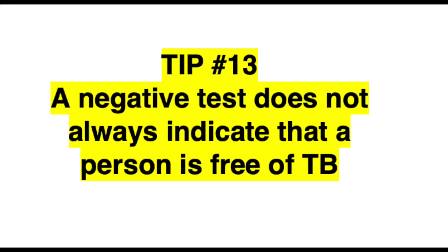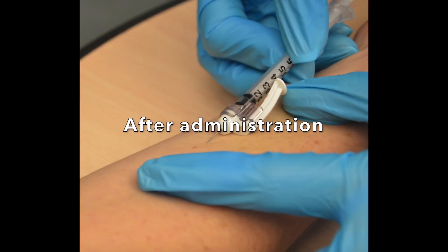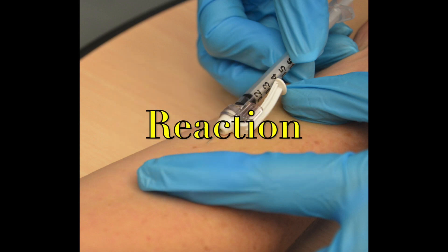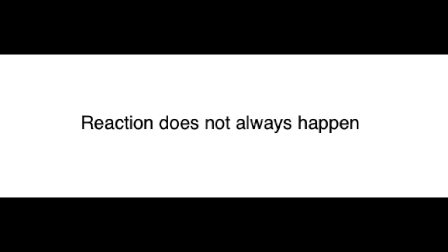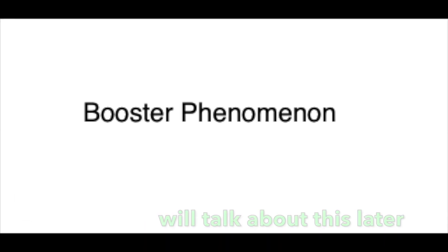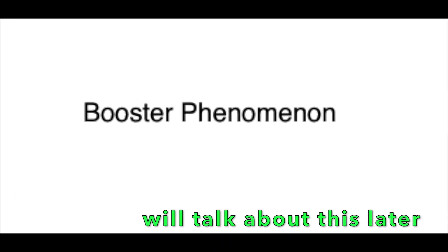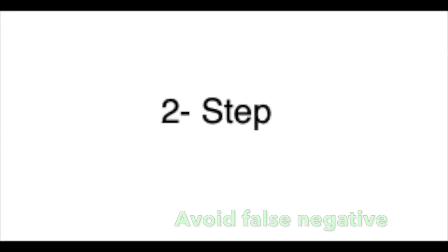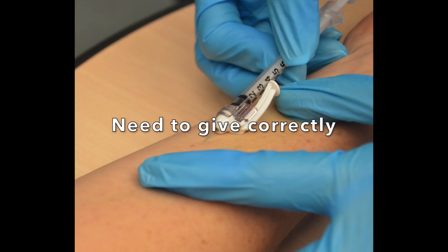Tip number thirteen: a negative test does not always indicate that a person is free of TB. If you had exposure to someone with TB within the last eight weeks prior to the test, it may result in a false negative. There may also be something called a booster phenomena that can create a false negative. It is important to understand that there can be false negatives and also false positives. Two-step testing is particularly important to avoid false negatives. If a TB test is administered incorrectly, this may also result in a false negative.